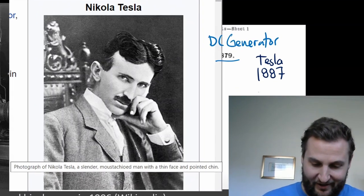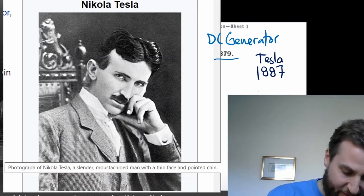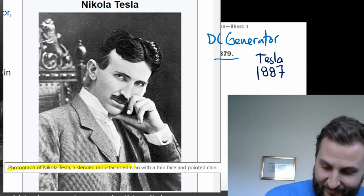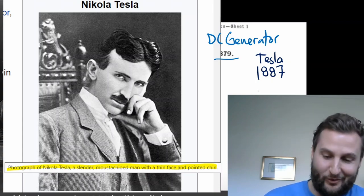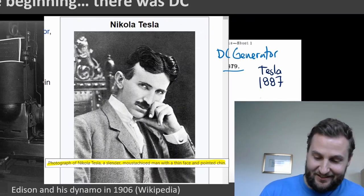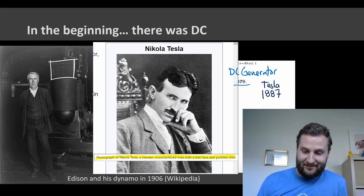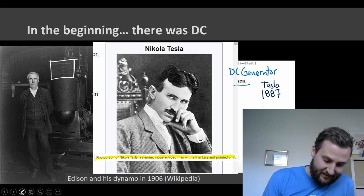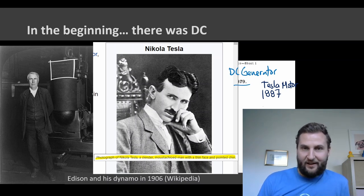I love this photo of Tesla — it's just from Wikipedia, and whoever updated the article has given some nice alt text: 'a slender mustachioed man with a thin face and a pointed chin.' He's got a kind of smoldering intensity to his look, at least in this photo.